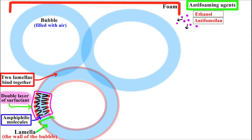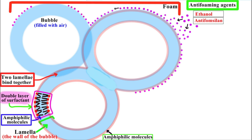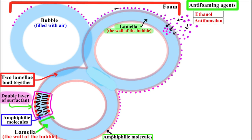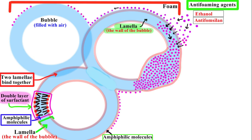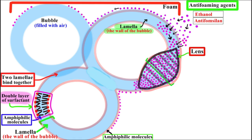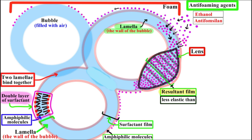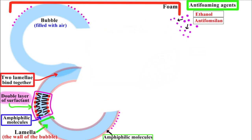Anti-foaming agents like ethanol and anti-foam silan are less viscous than the foaming medium and are easily spreadable on foamy surfaces. The anti-foaming agent reaches the surface of the lamella, then enters the wall of the bubble. Once inside the lamella, a lens is formed. The lens begins to spread, and the progressive spreading increases its thickness. The resultant film is considerably less elastic than the surfactant film that previously stabilized the lamella. This destabilization facilitates the rupture of the lamella, causing breakdown of the air bubbles and surface foam.